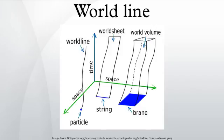Each point of a world line is an event that can be labeled with the time and the spatial position of the object at that time.